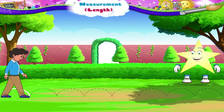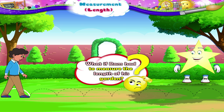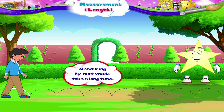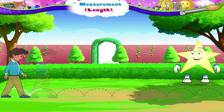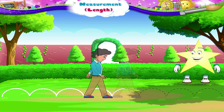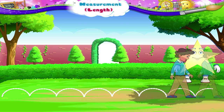But Starry, what if Ram had to measure the length of his garden? Measuring by foot would take a long time. So Ram measured the length of the garden with his pace.